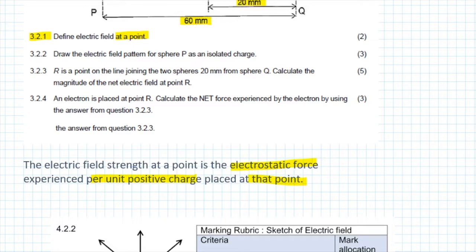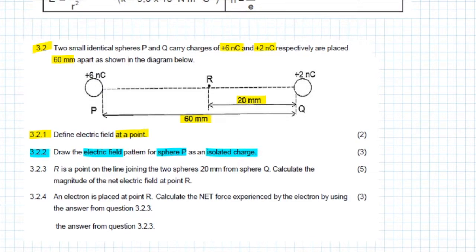It's very important that you use this definition instead of the vague definition of an electric field, and for this you're going to get two marks or none at all. Question 3.2.2 says: draw the electric field pattern for sphere P as an isolated charge. We are pretending that Q is not there, that P is on its own, and we remember that it is a positive charge. Remember, field lines go out of positive and into negative. They are perpendicular to the surface of the charge, and they do not cross each other at all.